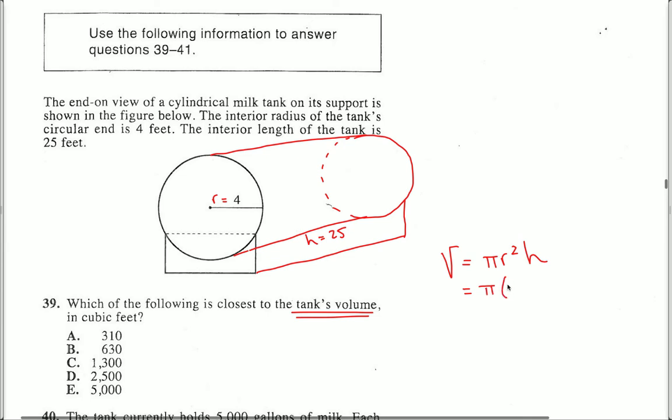Pi times radius squared times height gets me 1256.6 feet cubed. And the answer which is closest to that in cubic feet is letter choice C.